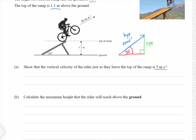As you may have already guessed, we need to use SOHCAHTOA. Because we have the opposite and hypotenuse, we're going to need to use the SOH part. That tells us that sine of the angle — which is 30 degrees — is equal to our opposite side, which is our vertical velocity Vy, divided by our hypotenuse, the full velocity of 10 meters per second. To solve for our vertical velocity, we multiply both sides by V, giving us bang on 5 meters per second.